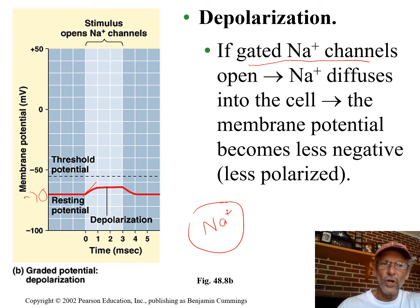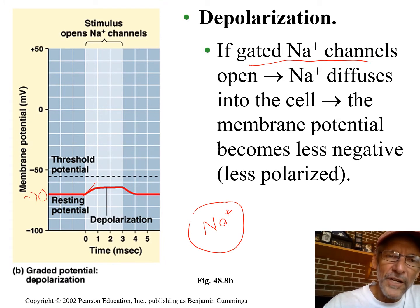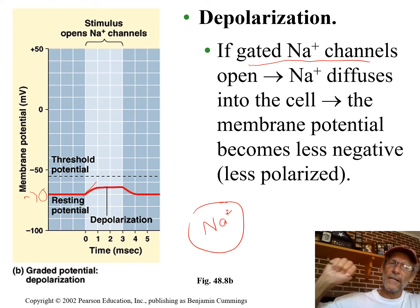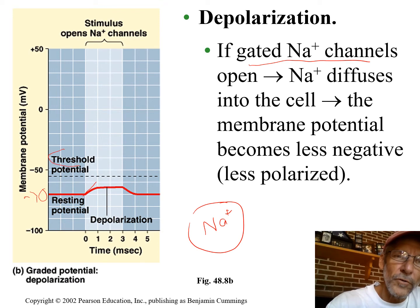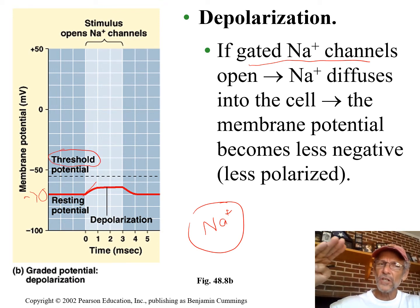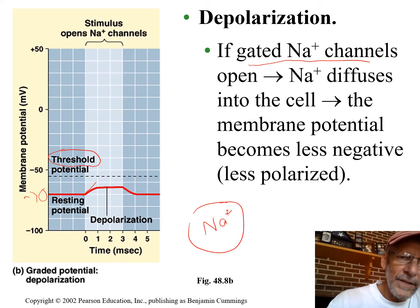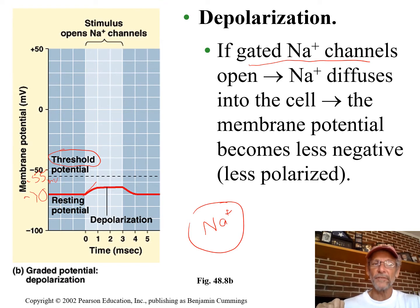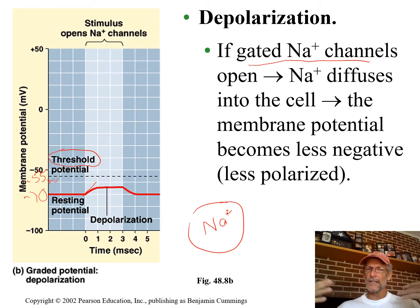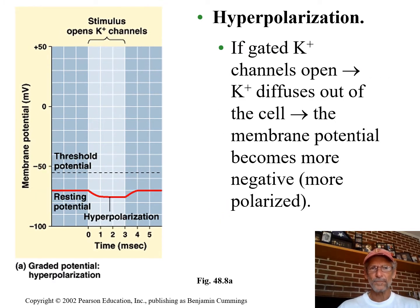How much less negative does it have to get inside before this impulse is triggered? That's what the word threshold refers to — the threshold is the limit that then causes this thing to happen. The limit is negative 55 millivolts, so it's got to be a 15 millivolt change toward the positive end. If that threshold is reached, the next event happens.